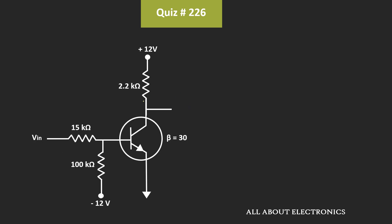First of all, for the given circuit, let's find out the value of IC(sat) — that is the maximum value of the collector current which can flow through this transistor circuit. The value of IC(sat) is equal to 12V divided by 2.2kΩ, which is equal to 5.45mA. This will be the maximum value of the collector current which can flow through this transistor circuit.